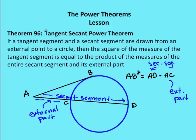The second theorem — theorem 96 — is the tangent-secant power theorem. It says if a tangent segment and a secant segment are drawn from an external point A to a circle, with tangent AB and secant AD, then the square of the measure of the tangent segment, AB squared, is equal to the product of the measures of the entire secant segment AD times its external part AC. So AB squared equals AD times AC.